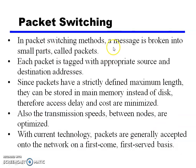In packet switching, a message is broken into small parts called packets. Each packet is tagged with the appropriate source and destination address. Since packets have a strictly defined maximum length, they can be stored in main memory instead of disk. Therefore, access delay and cost are minimized. Because the packet has a maximum defined length, secondary memory storage is reduced and transmission speed is improved. With current technology, packets are generally accepted onto the network on a first come, first served basis.